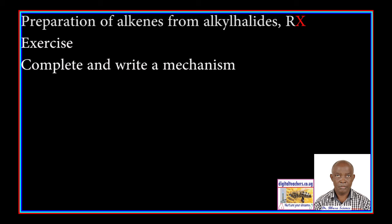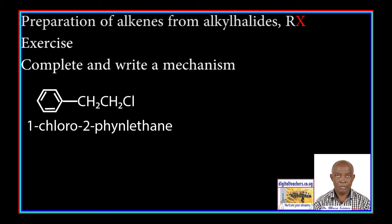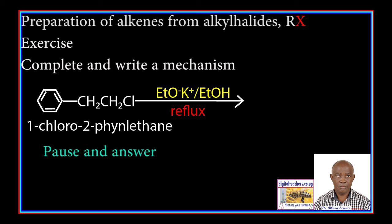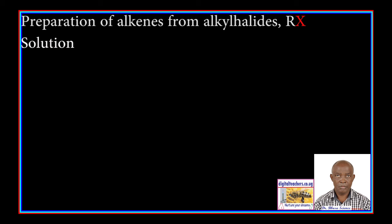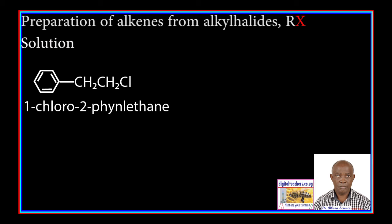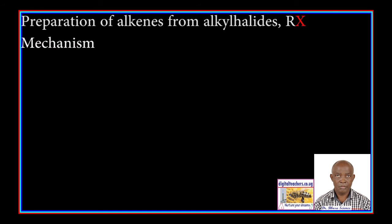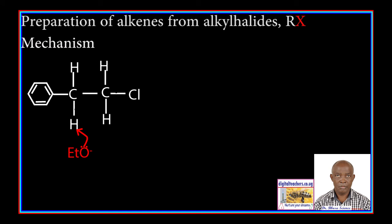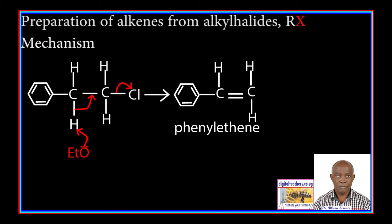Exercise: Complete and write the mechanism between 1-chloro-2-phenylethane and potassium ethoxide in the presence of ethanol. You can pause and answer. Solution: 1-chloro-2-phenylethane reacts with an ethoxide ion in the presence of ethanol to form phenylethene. In the mechanism, the ethoxide ion removes a proton from the carbon next to the one carrying the chloride. A double bond forms between the carbon atoms and the bond between the carbon atom and the chloride ion breaks, forming phenylethene.